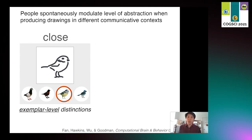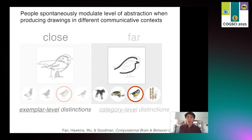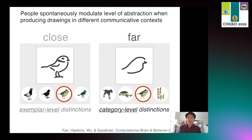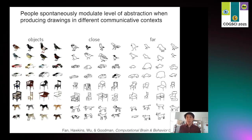They operationalized context by manipulating the similarity between the target and the other three distractor objects. On close trials, all of these objects belong to the same basic level category, encouraging the production of drawings that were diagnostic at the exemplar level. On far trials, the objects belong to different categories, letting participants get away with sparser drawings that only needed to be identifiable at the category level. They found that people systematically exploited information in context to produce more detailed drawings on close trials and more abstract drawings on far trials.